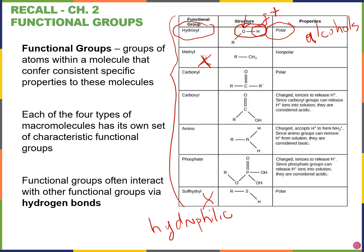Methyl groups are not reactive and also not hydrophilic. These actually affect gene expression — they can affect if a gene is on or off. They can also affect the shape and function of some of our sex hormones like estrogen. So these are non-polar, hydrophobic, and we'll see these in compounds that we call methylated compounds.